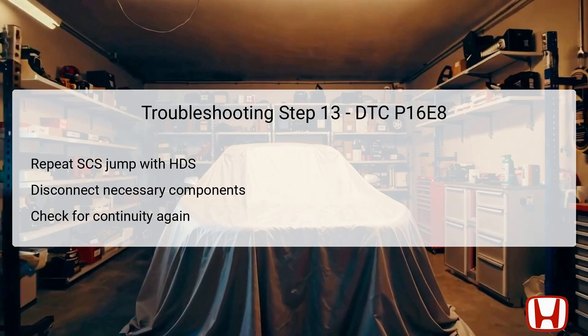Continuing in step 13, make another jump on the SCS line with the HDS and wait more than a minute to allow the diagnostic system to reestablish correct readings. Disconnect the necessary connectors, which include the shutter grille and the PCM connector, to gain access to check the wiring for continuity once more. Look for continuity between the shutter grille connector terminal and the corresponding PCM pin. If continuity exists, this means the LIN battery sensor wire is functioning well, indicating that other troubleshooting steps may be warranted. If not, focus must return to repairing any breaks in the LIN battery sensor wire between the PCM and the shutter grille component to ensure smoother communication in the future.